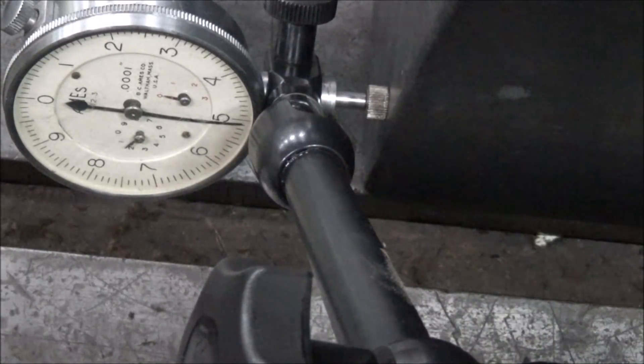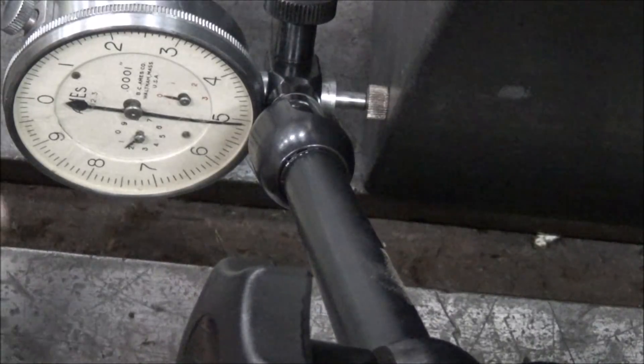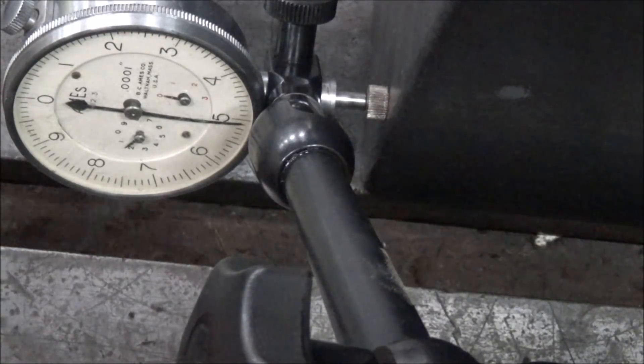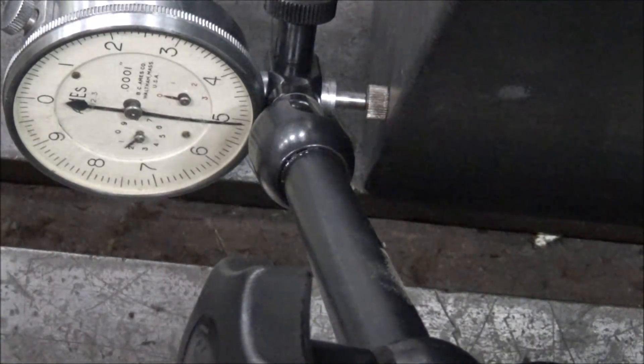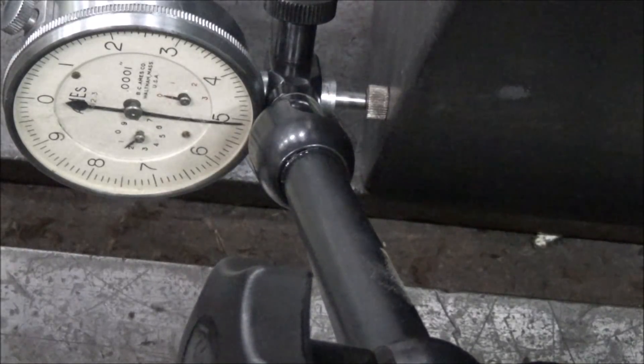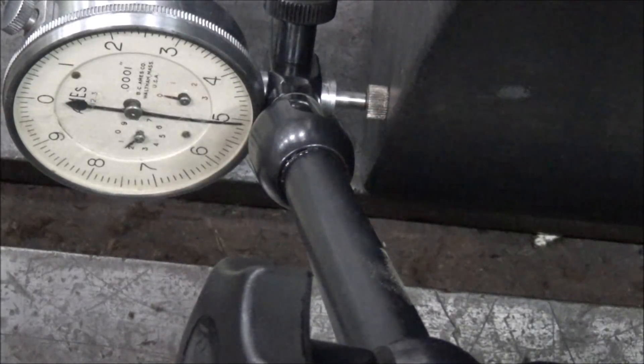Anyway, I've currently got it set at five thou. Remember these are numbers, or the thousandths marks on this indicator, we're reading tenths per division. So I'll fire this thing up and we'll raise it up and see which way I need to go.